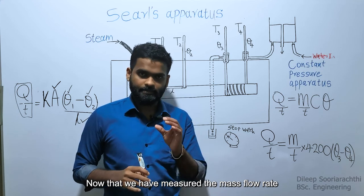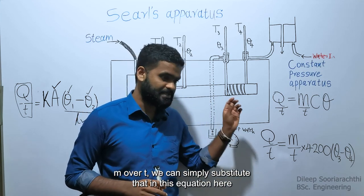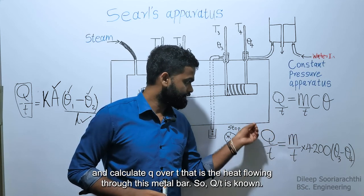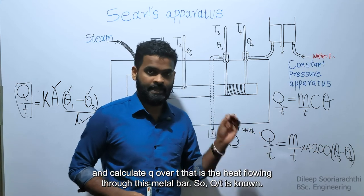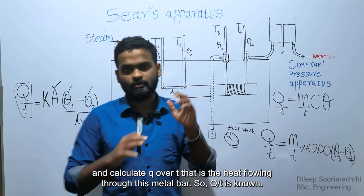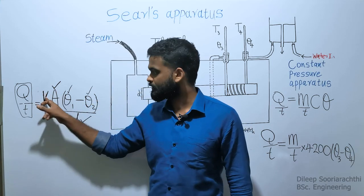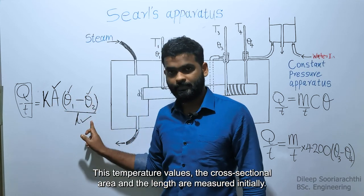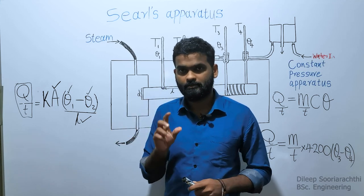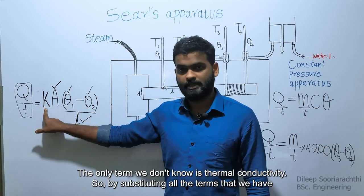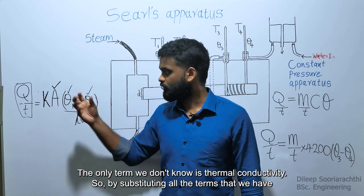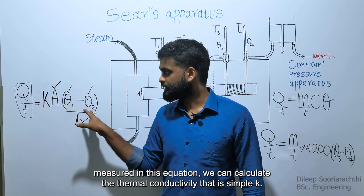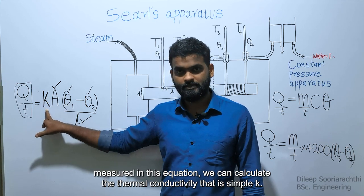Now that we have measured the mass flow rate M over T, we can substitute it in the equation to calculate Q over T — the rate of heat flow through the metal bar. The temperature values, cross-sectional area, and length have been measured. The only unknown term is the thermal conductivity, so by substituting all the measured values into the equation, we can calculate the thermal conductivity, which is K.